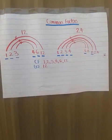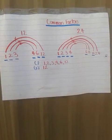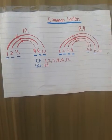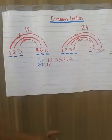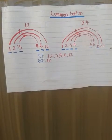You find the greatest common factor by just looking for the greatest number in the common factors. For this example, the GCF or greatest common factor is 12, so we just listed 12 beside GCF. And that's common factors.